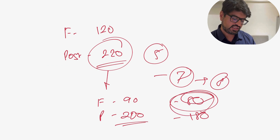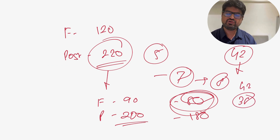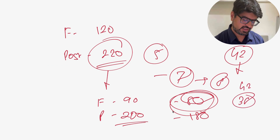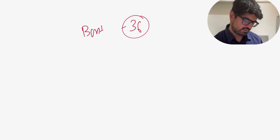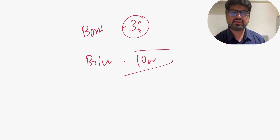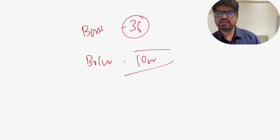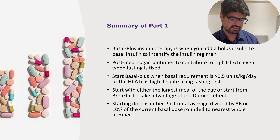As fasting starts falling, reduce the glargine dose from 42 to 38 units. In this real-life case, the basal dose settled at 36 units and the bolus at around 10 units — a comfortable regimen that brought HbA1c down to 7.1% over the next few months.